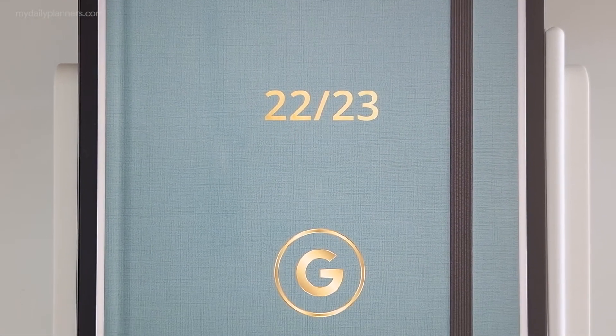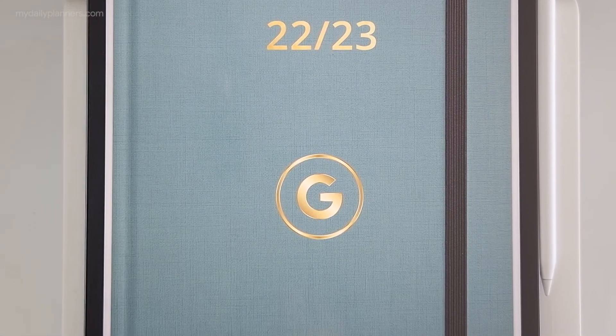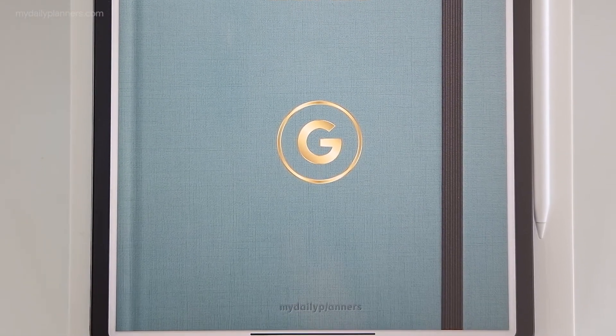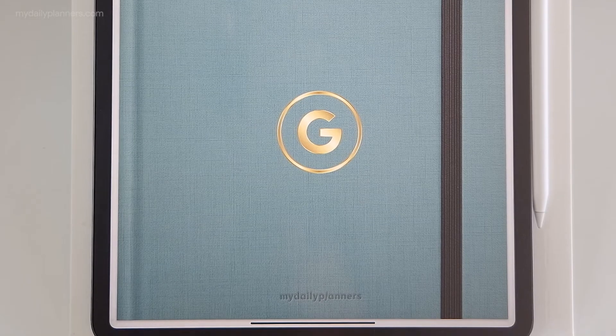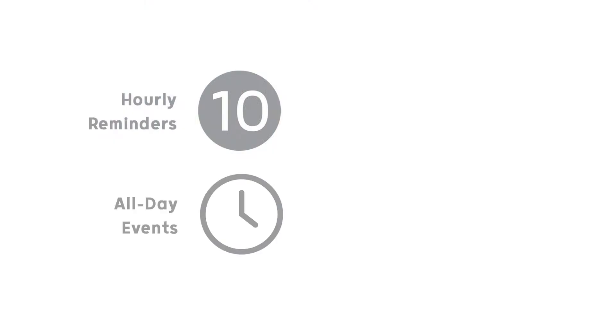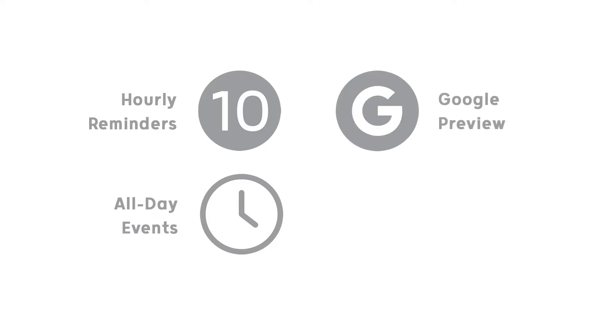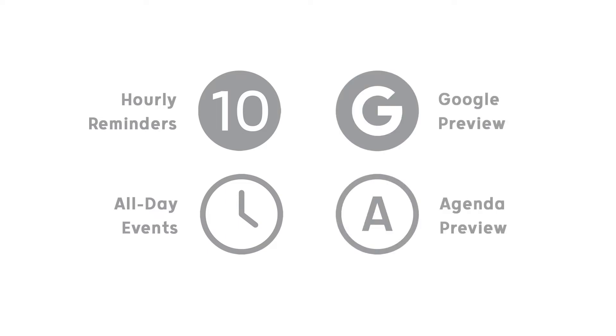So there you have it — 4 features of our Google Planner: Hourly Reminders, which I think are the most useful, All Day Events, Google Preview, and Agenda.